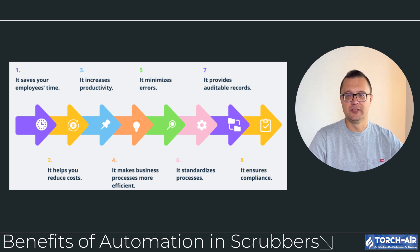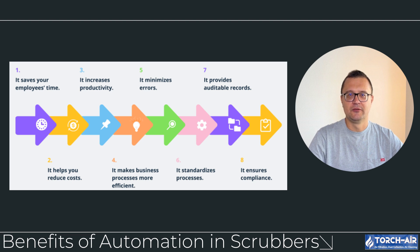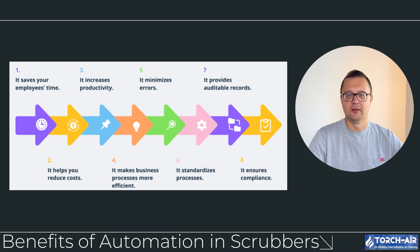Automation in scrubbers is the key to efficient and safe operation. From automatic solution supply and pH control to liquid level management and temperature regulation, automation ensures that your scrubber system runs smoothly and efficiently. By integrating with control systems like SCADA, operators can monitor performance in real time and respond to changes quickly. Thanks for tuning in. Until next time, keep your scrubber systems optimized and running at their best.